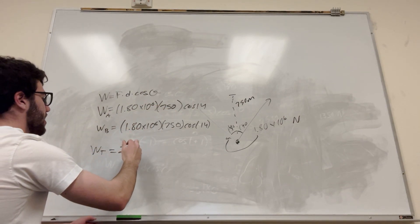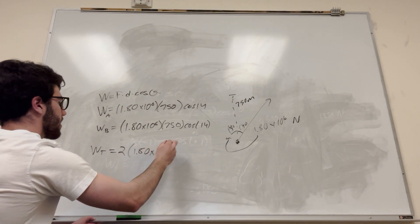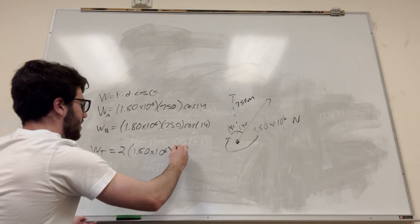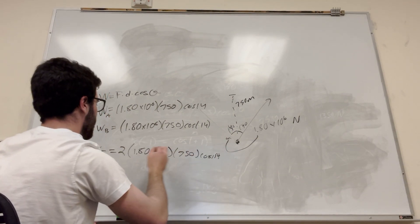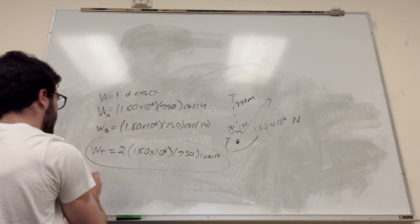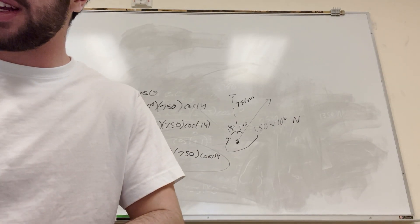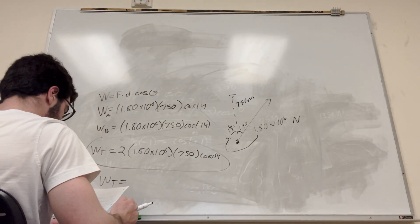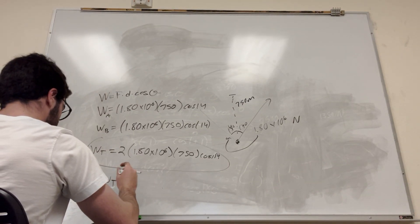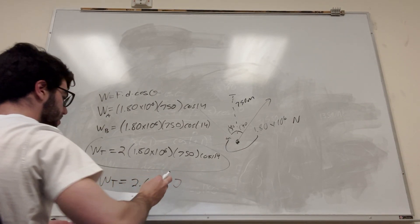So the total work is going to be 2 times 1.80 times 10 to the 6, times 750, times cosine of 14. This equation gives you your final answer, which is equal to 2.6 times 10 to the 9 joules.